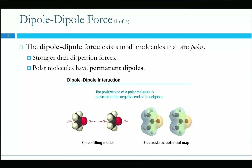Dipole-dipole force is fundamentally the same as dispersion force, but it's permanent. Dispersion force gives occasional polarization — one side positive, one negative — but it comes and goes. In dipole-dipole force, electrons are permanently shifted because of the atoms involved. If you have an oxygen, it makes one side more negative and the other more positive due to electronegativity difference and asymmetry, creating a permanent dipole.